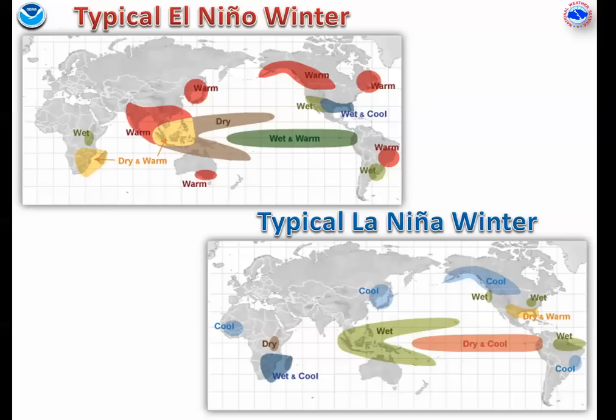In some places the change to weather is negligible, shown in gray, but in others the change can be drastic, shown by the highlighted areas. For instance, the southeastern U.S. can expect a wetter and colder than normal winter during El Niño.